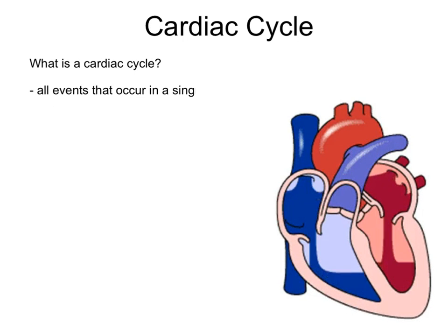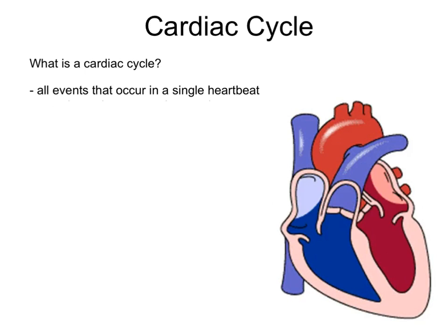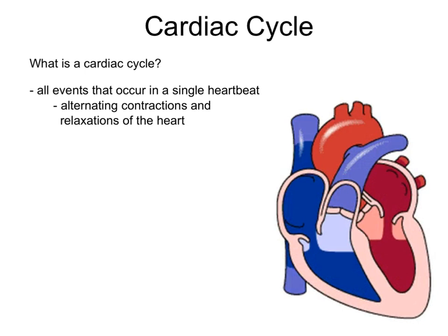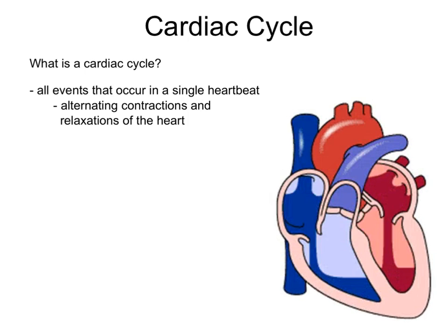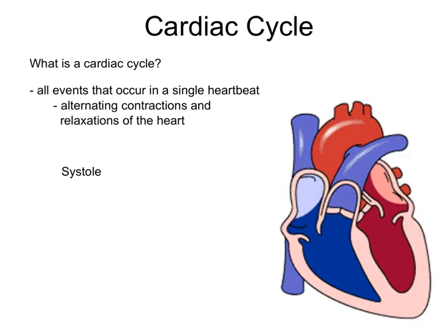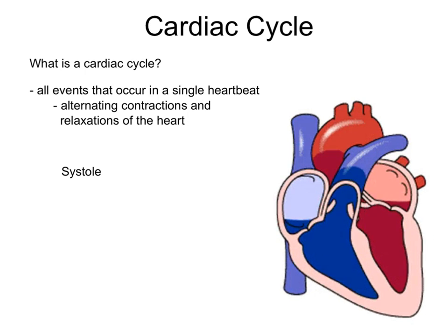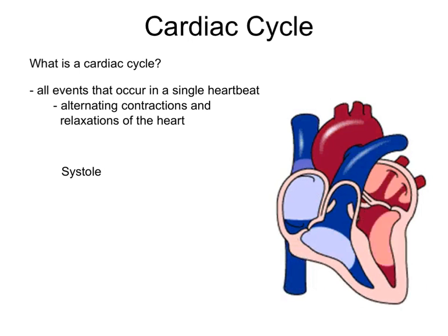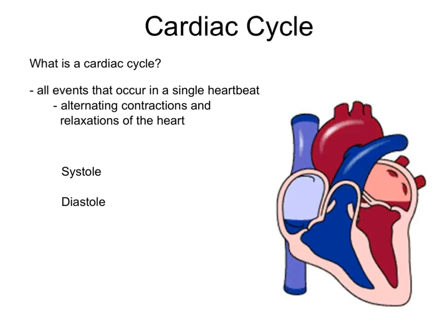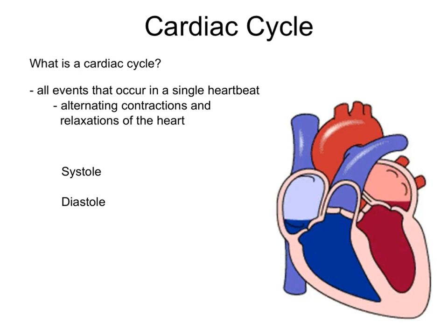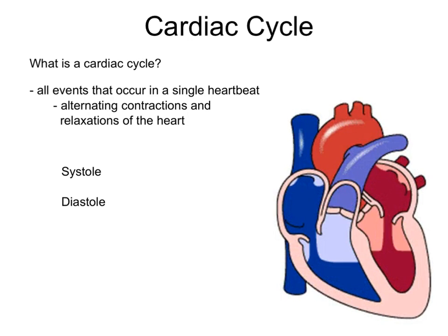The cardiac cycle refers to all of the events that occur in a single heartbeat — the alternating contractions and relaxations of the heart. Contractions of the myocardium is what we call systole, during which the myocardium of the chambers contracts, causing the chambers to squeeze blood out. Relaxation of the myocardium is what we call diastole, during which the myocardium of the chambers relax, allowing the chambers to fill with blood.